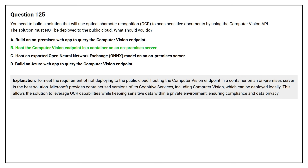To meet the requirement of not deploying to the public cloud, hosting the Computer Vision endpoint in a container on an on-premises server is the best solution. Microsoft provides containerized versions of its Cognitive Services, including Computer Vision, which can be deployed locally. This allows the solution to leverage OCR capabilities while keeping sensitive data within a private environment, ensuring compliance and data privacy.